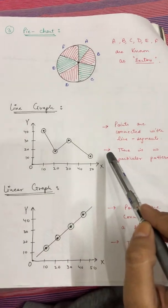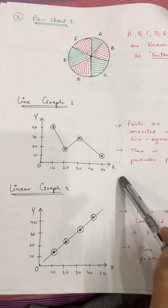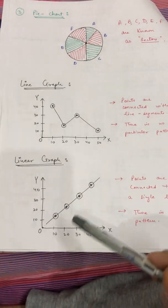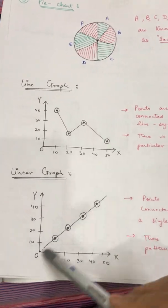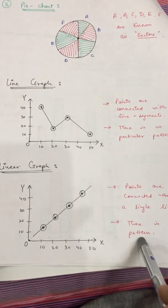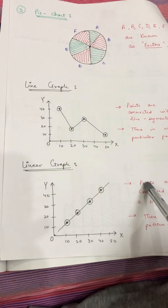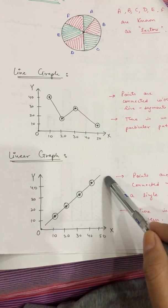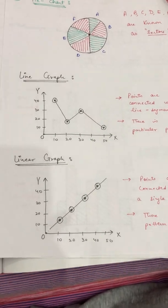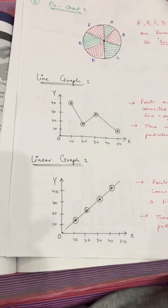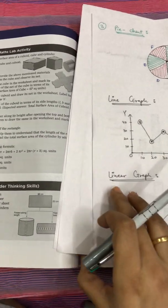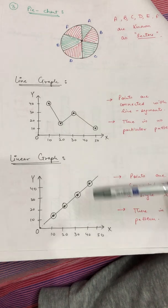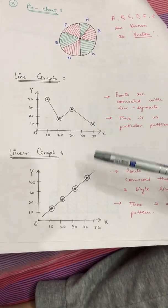Another difference: in the line graph there is no particular pattern — the picture can be in various zigzag forms. In the linear graph, there will be a proper symmetry and a pattern, meaning the points form a straight line. Some students get confused that these are the same thing, but there are differences between the two.